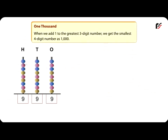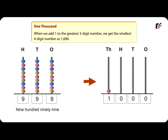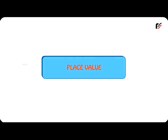One thousand: when we add one to the greatest three-digit number, we get the smallest four-digit number, which is one thousand. Place value.